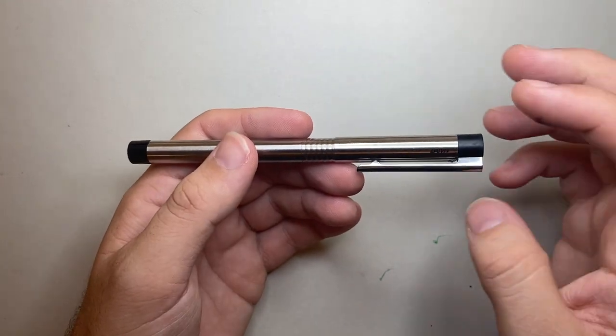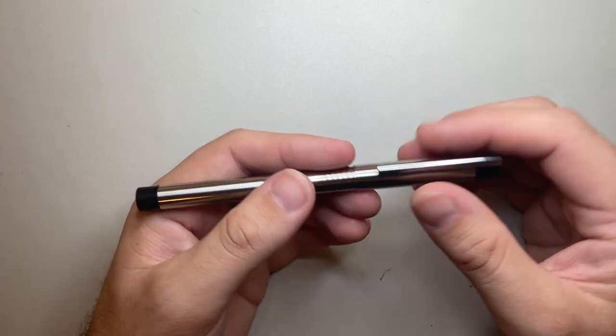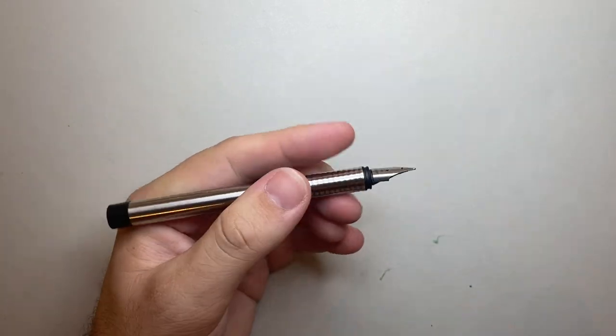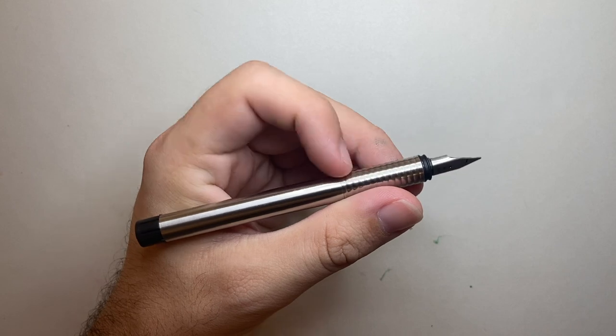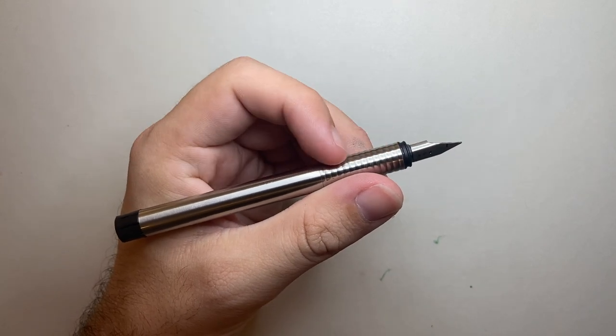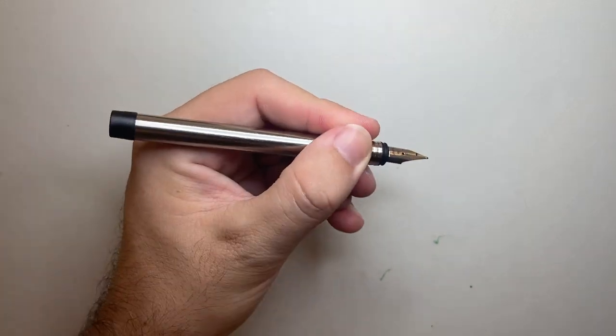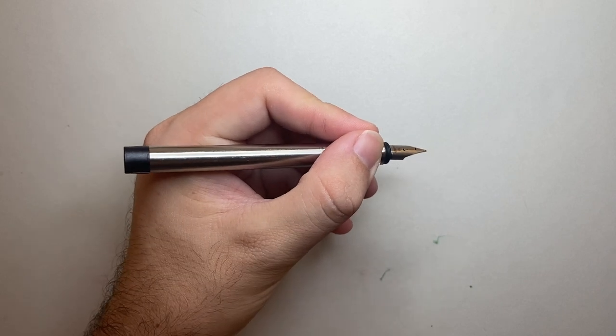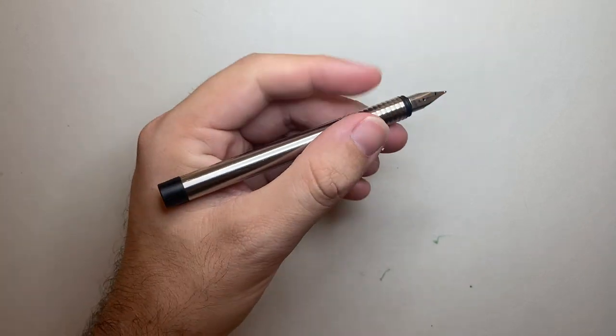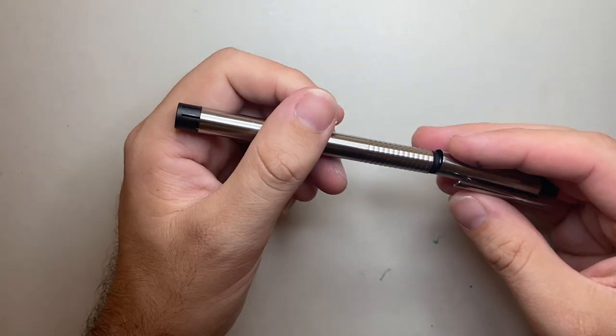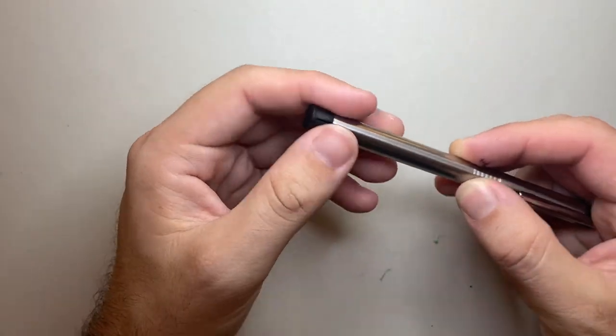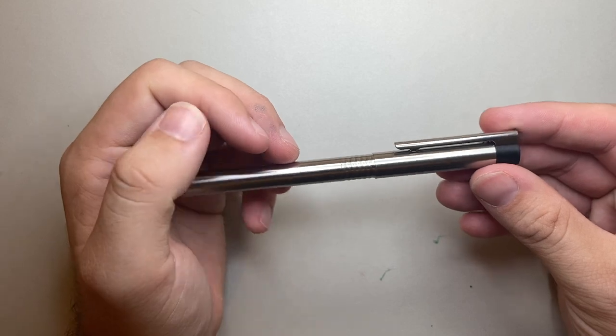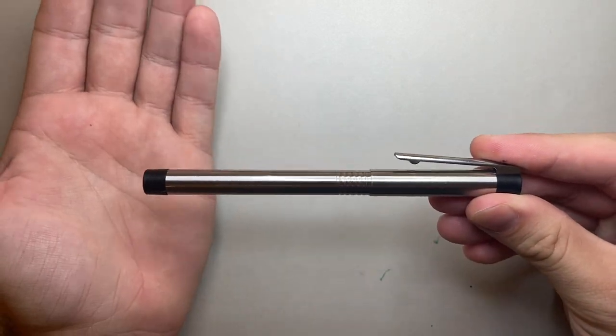The last con is another one of these ones that could be a pro or a con, and that is the grip. For me, I don't mind it. I don't mind that textured grip, but some people really do not like textured grips. What that does mean is that it doesn't get slippery. You always have purchase on the pen. You're never going to feel it get running away from you, like say the Lamy studio with one of those metal sections. So pros and cons.